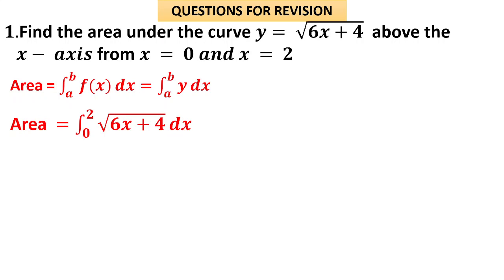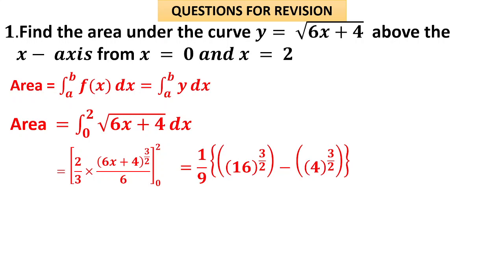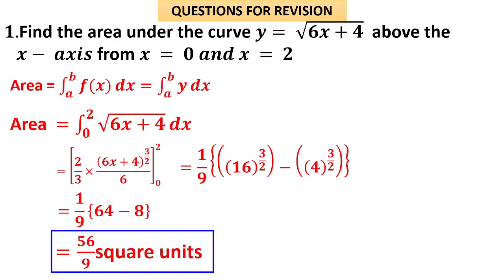We know the integral of √x is (2/3)x^(3/2). But here the coefficient of x is 6, so it becomes (2/3)(6x + 4)^(3/2) divided by 6 (the coefficient of x), evaluated from 0 to 2. Substituting 2 gives 16^(3/2) = 64; substituting 0 gives 4^(3/2) = 8. The constants are taken outside, and the final answer is 56/9 square units.